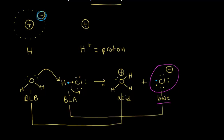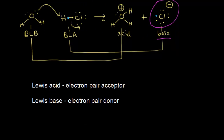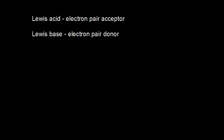Let's look at another definition for acids and bases that's sometimes used in organic chemistry — the Lewis definition. A Lewis acid is an electron pair acceptor, and a Lewis base is an electron pair donor. A good way to remember this: Lewis acid and acceptor both start with A. For Lewis base, take the D in donor, reflect it, and you get a lowercase b, which refers to base.